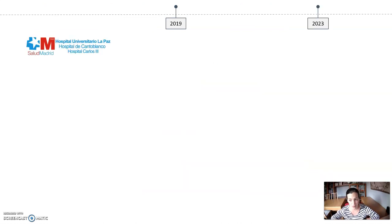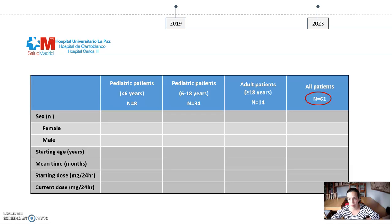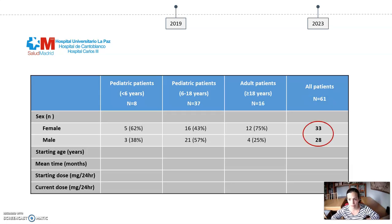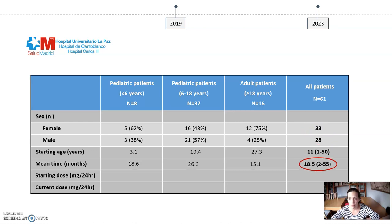After this introduction, I am going to share our experience with alpelisib in PROS patients, with a focus on patients with lymphatic malformations. So far we have treated 61 patients — 33 females and 28 males. The starting age of alpelisib treatment was 11 years old, and the mean time of treatment has been 18 months.